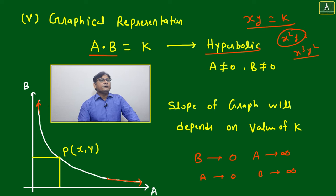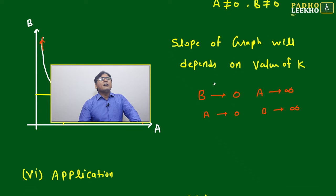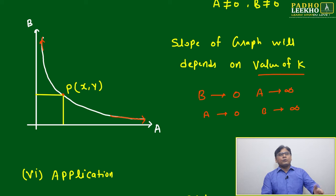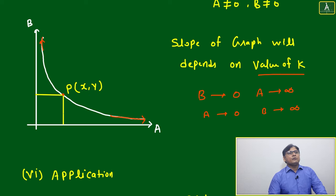In this scenario, this is a hyperbolic graph and the slope of the graph depends on the value of K. For any point, if you want to find the coordinate, simple coordinate geometry. We know this is the coordinate of the point (x, y).